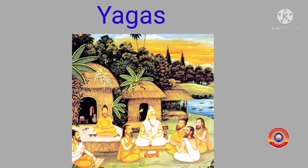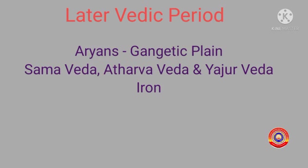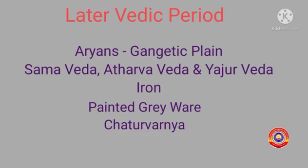Let's recall today's class. In the Later Vedic period, the Aryans settled in the Gangetic Valley. Human life was described in the Samaveda, Atharva Veda, and Yajurveda. Iron was invented in this time. They used earthenware known as painted greyware. The society was divided into four groups based on occupations, known as Chaturvarniya. That's all for today. See you in the next class. Thank you.